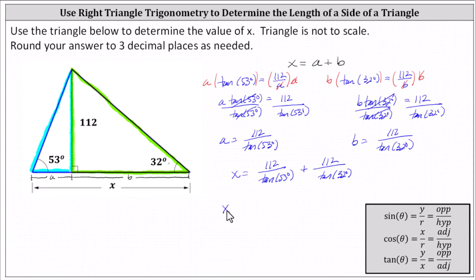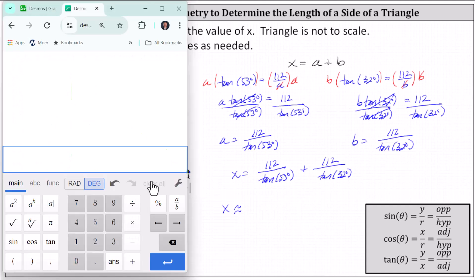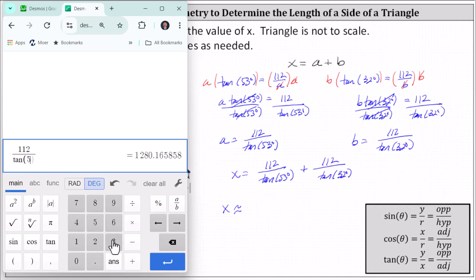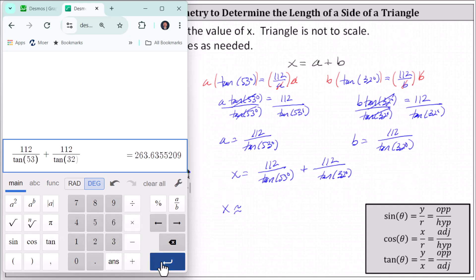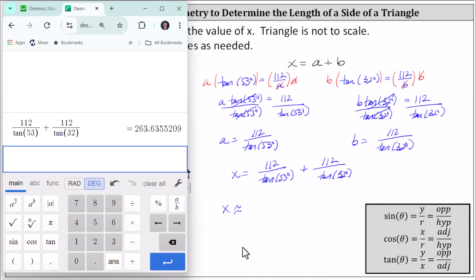Now we go to the calculator and round to three decimal places. It is important to make sure the calculator is in degree mode. I'll be using the Desmos Scientific Calculator, but whichever calculator you use, make sure it is in degree mode. We enter 112 divided by tangent 53 degrees, close parenthesis, right arrow, plus 112 divided by tangent 32 degrees, and enter. To three decimal places, we have x is approximately 263.636.